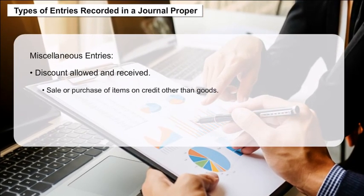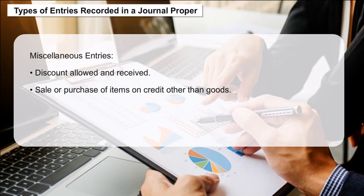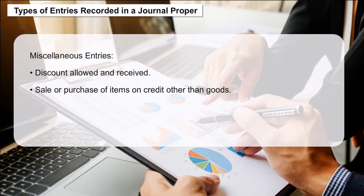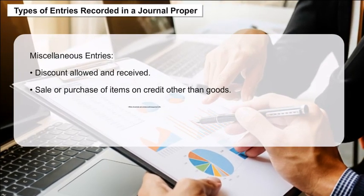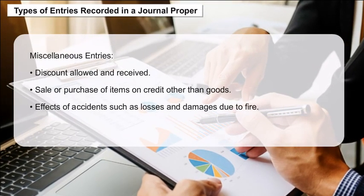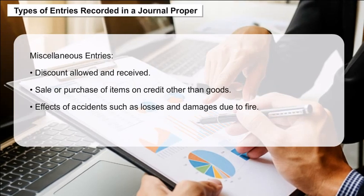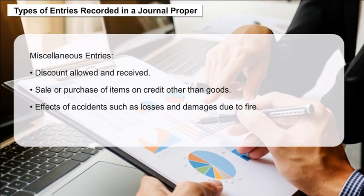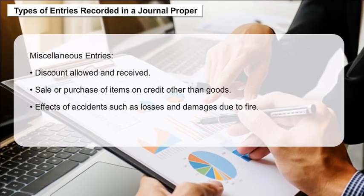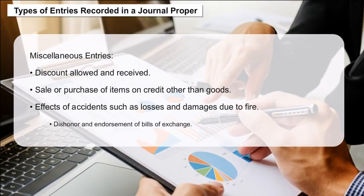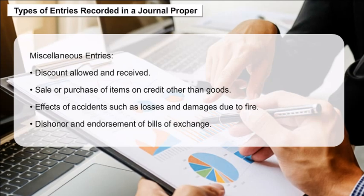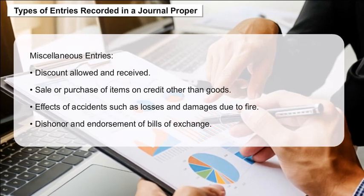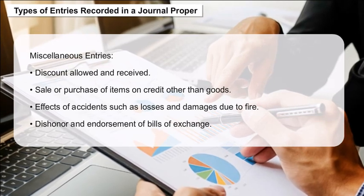Other types of entries recorded in a Journal Proper include: discount allowed and received, sale or purchase of items on credit other than goods, effects of accidents such as losses and damages due to fire, and dishonor and endorsements of bills of exchange.